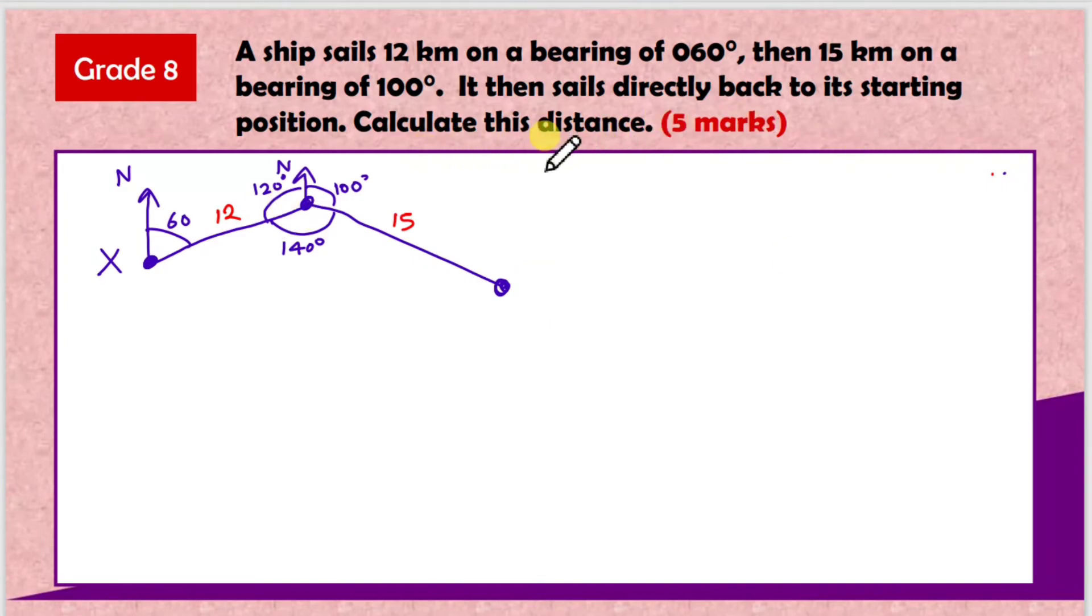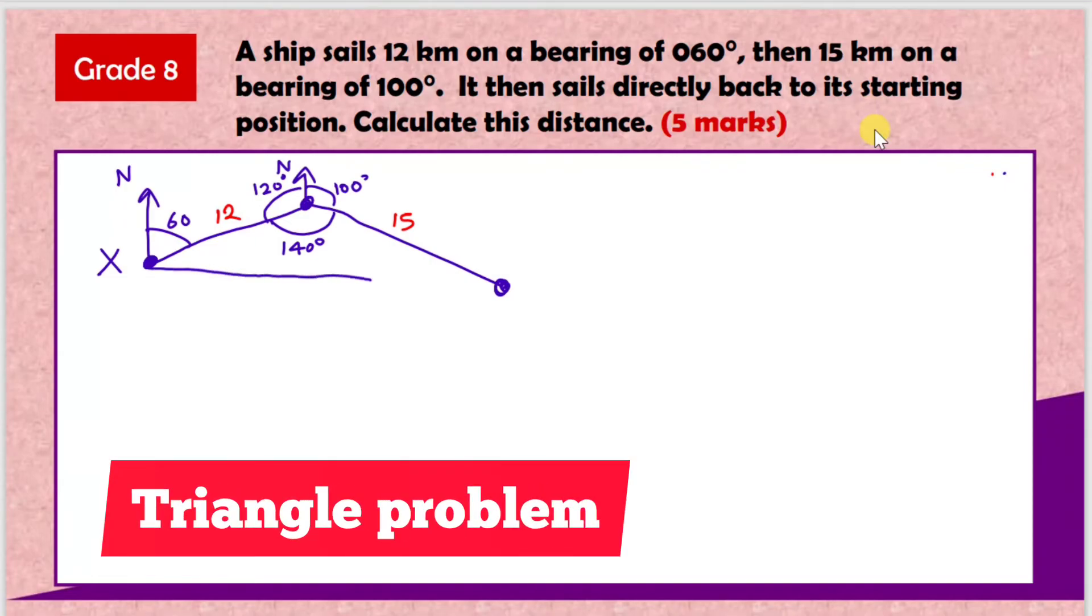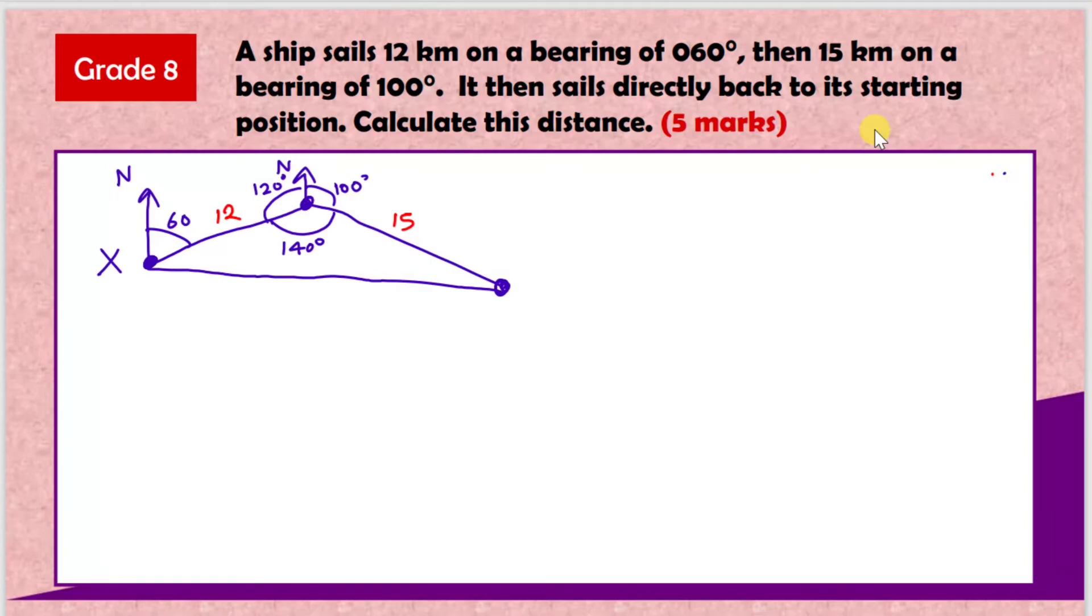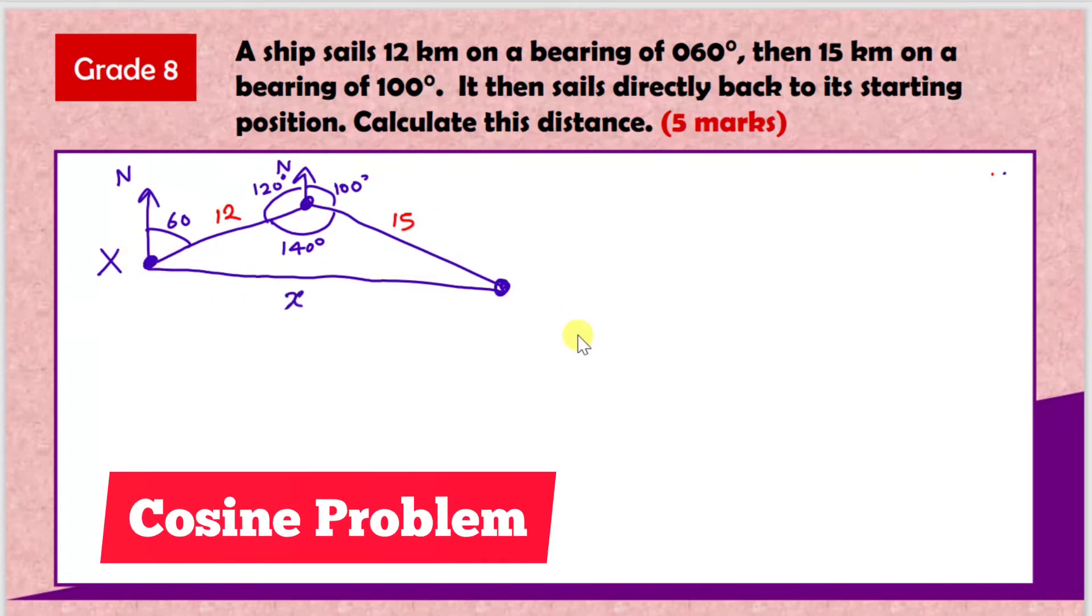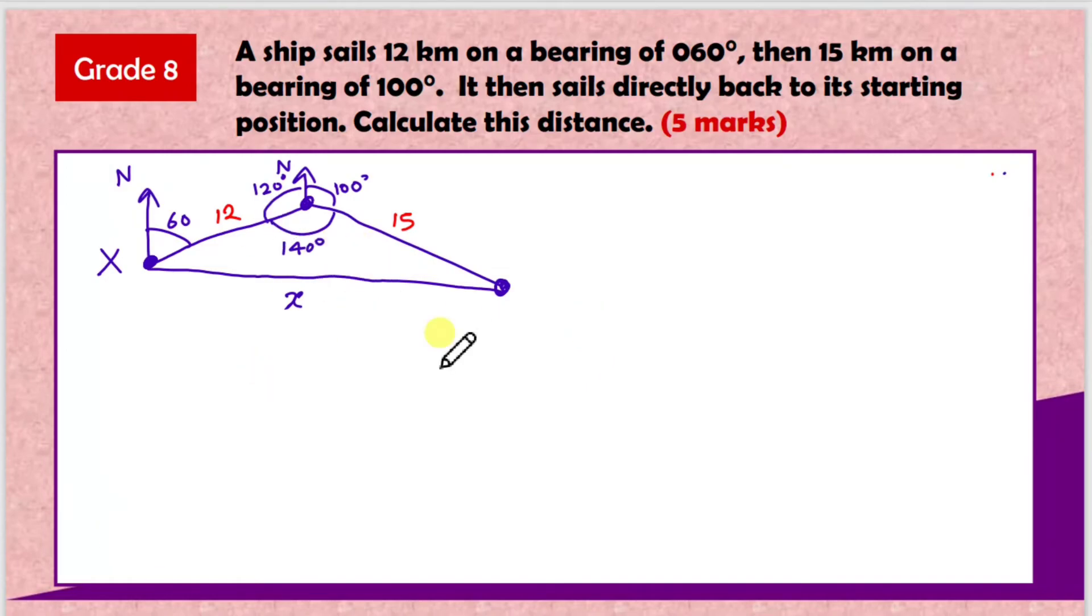Now let's get back to where we were. It says it then sails directly back to its starting position. So this is more or less another triangle problem. We've got a couple of lengths - we've got 140 degrees here, we've got 12, we've got 15, and I want to calculate this distance here. So this is a cosine problem. To do the cosine rule, let's write the formula: it's always a² equals b² plus c² minus 2bc cos A. The A is always the focused angle and the length.